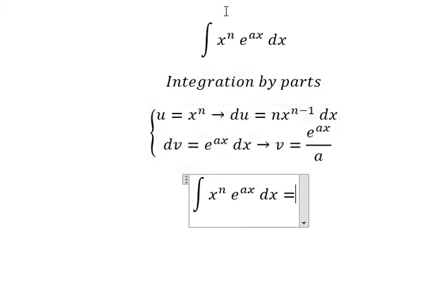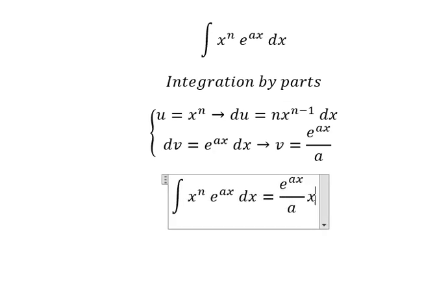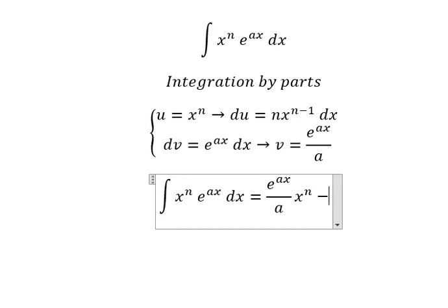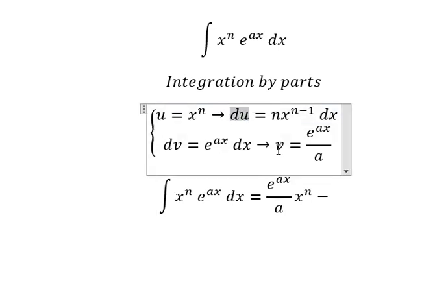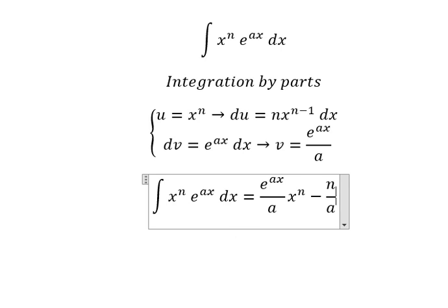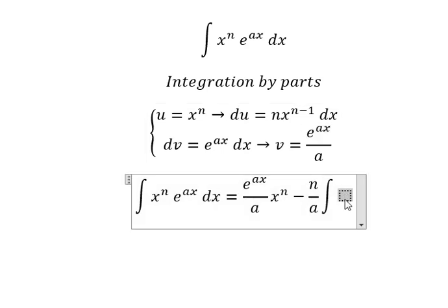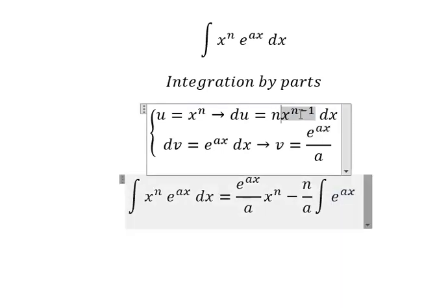Next we have u multiplied by v, so that's e to the power of ax over a times x to the power of n, minus the integral of du multiplied by v. So we have n over a times the integration of x to the power of n minus 1 times e to the power of ax dx.